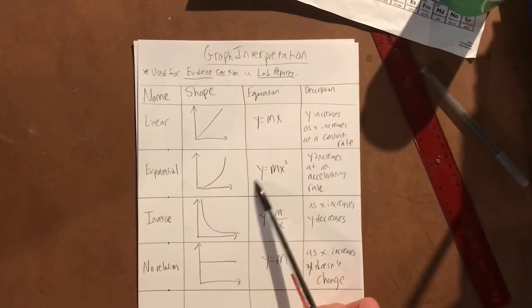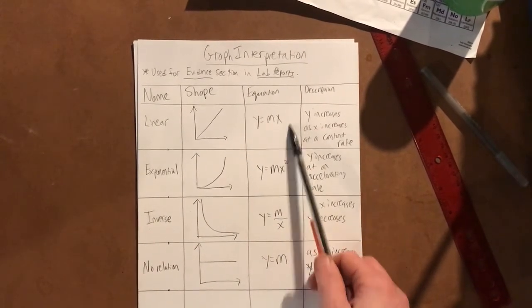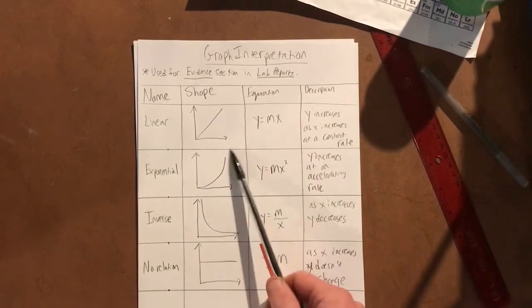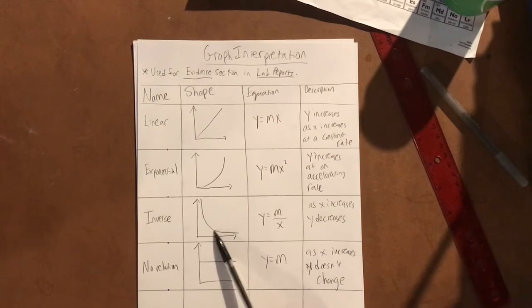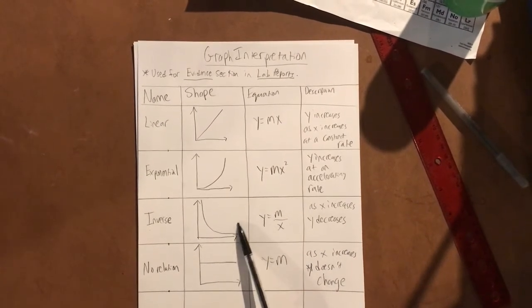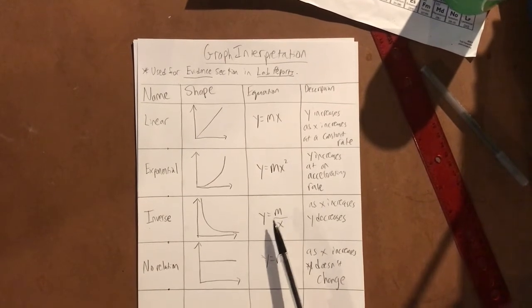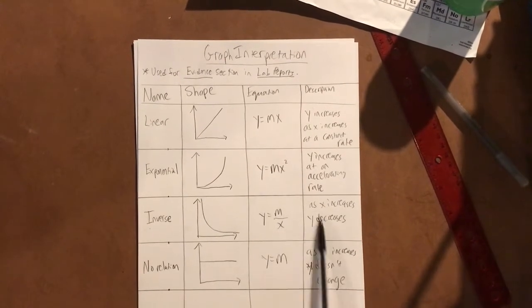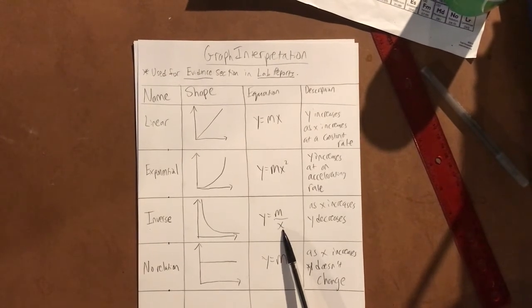It's a little different than linear—the x gets squared, that's what makes the line curve up. Inverse is when the variables do the opposite—the x and the y do the opposite of each other. So when x goes up, y goes down, and your equation name when you go to Excel is gonna look like some number over x.